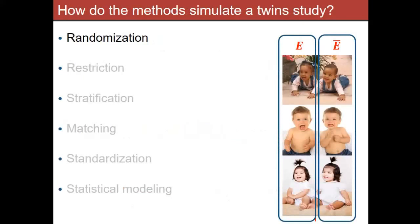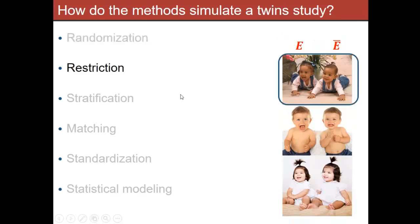Randomization is about balancing — you randomly hand out exposure such that on average the confounding variables are balanced between exposed and unexposed groups. In 530, you talked about restriction — the most basic technique in observational data — where you do your analysis on a very narrow slice of the population to make the groups comparable. If everyone in your study is female, then female can't be a confounder. That's the idea with restriction.